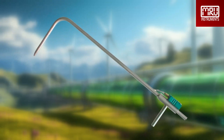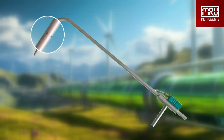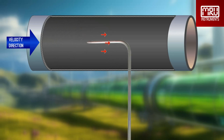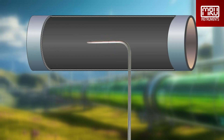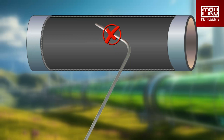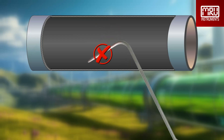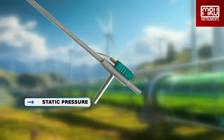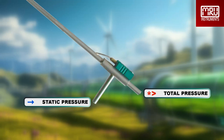Seen here is the L-type pitot tube with temperature measurement. Here magnified are the static pressure entrance ports. The entrance port for total pressure is at the tip of the pitot tube. When measuring flow velocity, it is important that the total pressure port entrance points against the flow direction, and that the pitot tube is straight inside the duct. The measurement will be incorrect when the pitot tube points either too high or too low. At the other side of the pitot tube we have the hose connection for static pressure, the hose connection for total pressure, and the connection for temperature measurement.